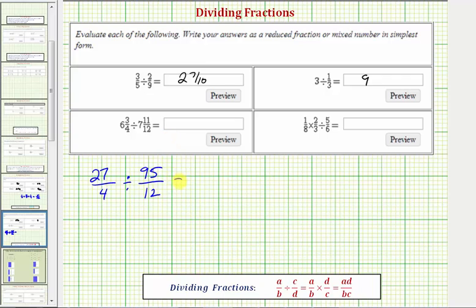Dividing by 95 twelfths is equivalent to multiplying by 12 ninety-fifths. So write this as 27 fourths times 12 ninety-fifths. Before multiplying, we want to look for common factors between the numerators and denominators. Notice how four and 12 share a common factor of four. There's one four in four and three fours in 12. Now we'll go ahead and multiply. 27 times three is equal to 81. And one times 95 equals 95. This does not simplify, so this is our quotient. 81 ninety-fifths.